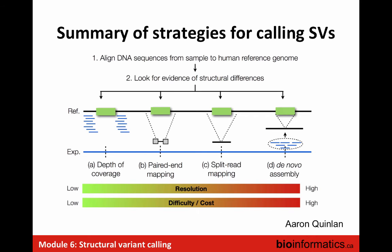In summary, you've got the whole range of approaches: starting from depth of coverage, which has low resolution but is quite easy — you're just binning and looking. Then paired-end approaches that have better resolution. Then split reads that really pinpoint breakpoints, but you need sufficient sequencing depth to get enough split reads. And then full de novo assembly, which is in theory high resolution but very difficult — you don't know the difference between a real variant and an assembly artifact.